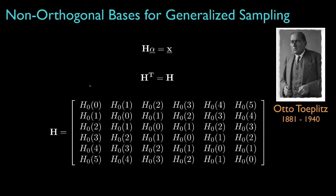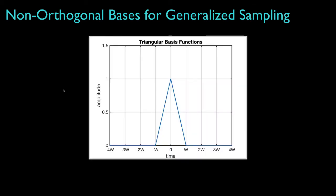It's important then that we utilize this structure when we implement our computational methods. As an example, let's take a look at a basis set built from triangular functions. Here for instance is the basis function for the index k equals 0. This is the standard triangle with a base width equal to 2w and a height equal to 1.